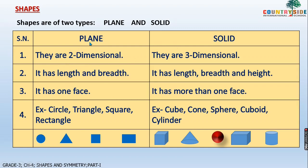Plain shape — they are two dimensional. That means from two sides you can see, that is two dimensional. It has length and breadth. So when we are talking about the plain shape, it is having length and breadth.